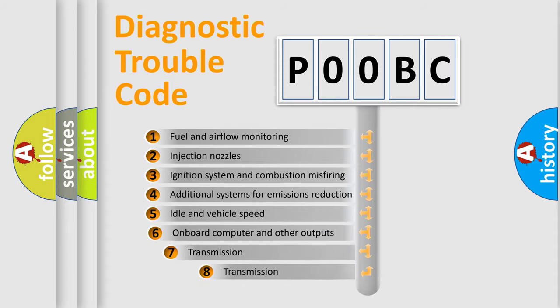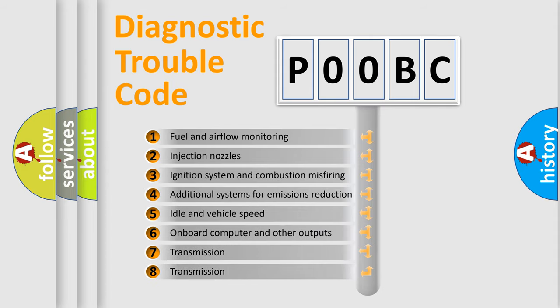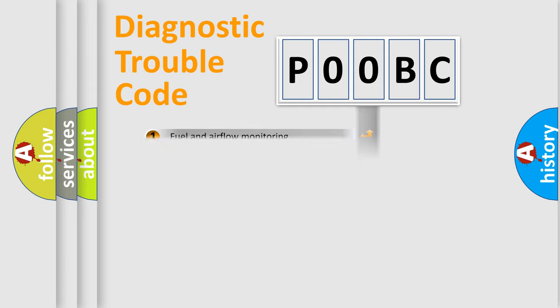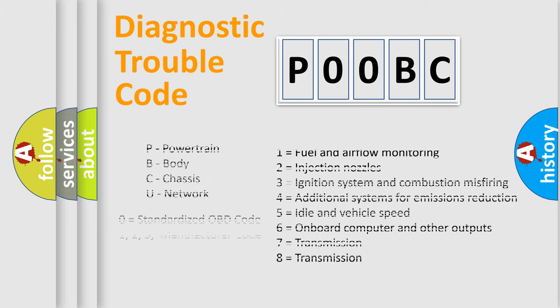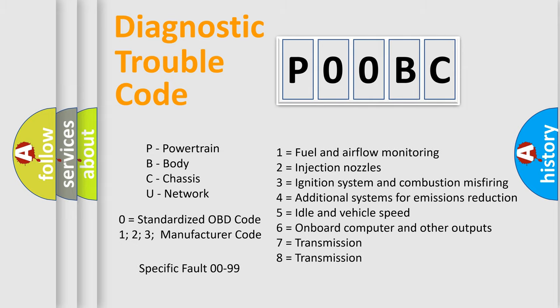The third character specifies a subset of errors. The distribution shown is valid only for the standardized DTC code. Only the last two characters define the specific fault of the group. Let's not forget that such a division is valid only if the second character code is expressed by the number zero.